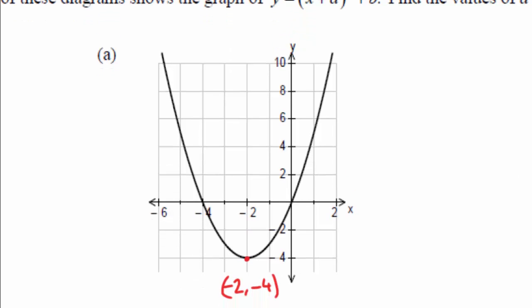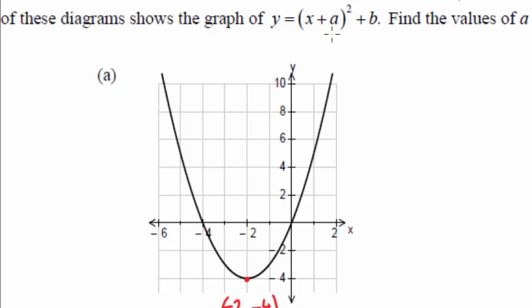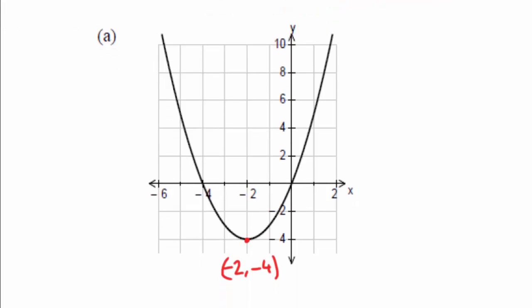And again, they're just asking you in terms of a and b. So what we've got here, remember it's minus a and b is your turning point. So you just basically take the negative of what you've got. So what we've got is a equals 2 and b equals minus 4.